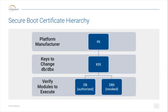Secure Boot starts with a PKI hierarchy. It starts with the platform manufacturer's key — the Platform Key or PK — which is typically a certificate issued by the hardware manufacturer, so if you have an ASUS motherboard the PK will be issued by ASUS. The next key in the hierarchy is the Key Exchange Key, or KEK, which can actually be multiple keys — for example one from Microsoft and one from Canonical if you're running Ubuntu. These KEKs are used to validate what we call the DB and the DBX.